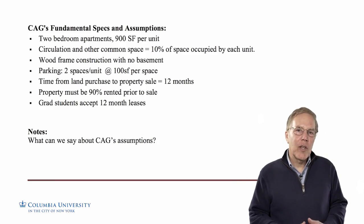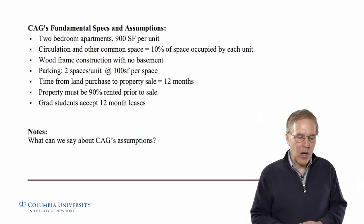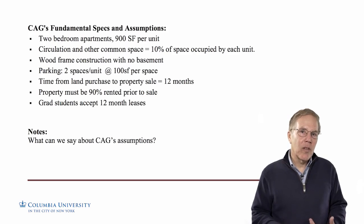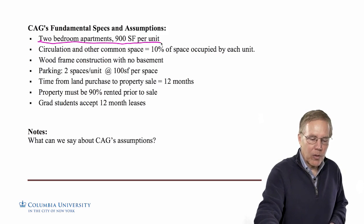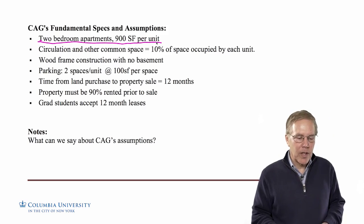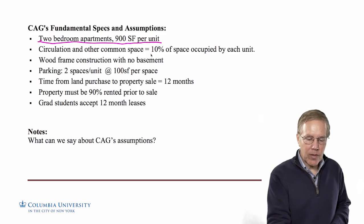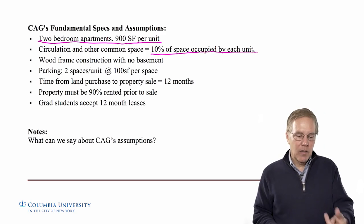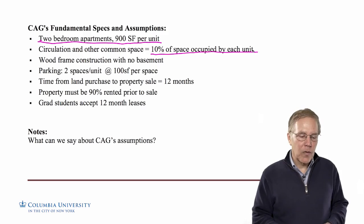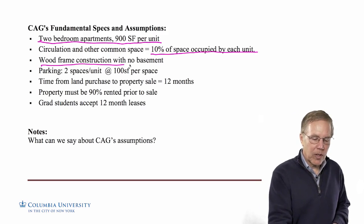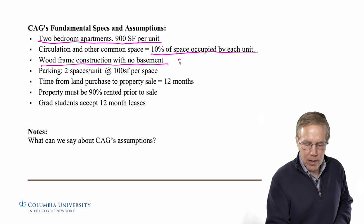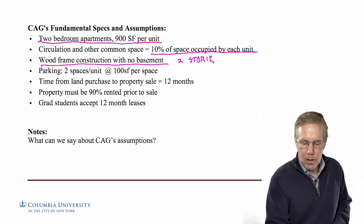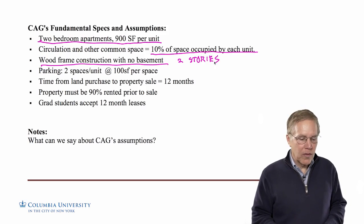Based on their experience doing this type of thing for other colleges on the East Coast, CAG thinks they're going to be best off making two-bedroom apartments at 900 square feet per unit for grad students. They think they're going to have to set aside 10% of the space per unit for circulation — so for every apartment, they'll need 90 square feet of circulation. They're going to do wood frame construction with no basement, and this is going to be a two-story building, both of which come from local codes around Lewisburg.